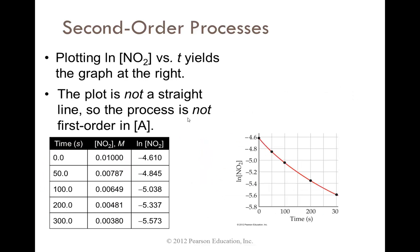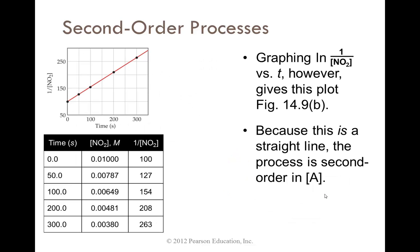Now let's go to first order, the ln of NO2. When we do this one, once again, it's not a straight line; there's a slight curve there. So we keep going to the second order, graphing 1 over NO2 versus time. However, this gives a plot that is a straight line. Because this is a straight line, the process is second order in A.